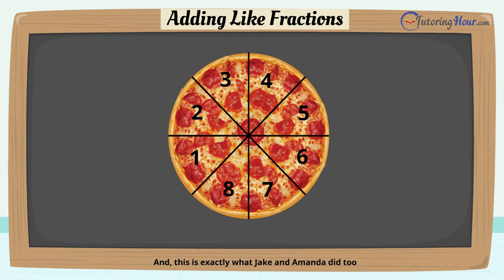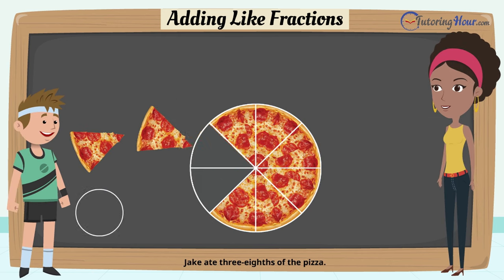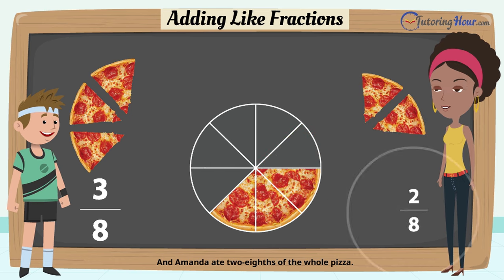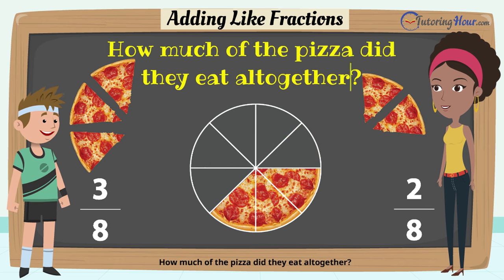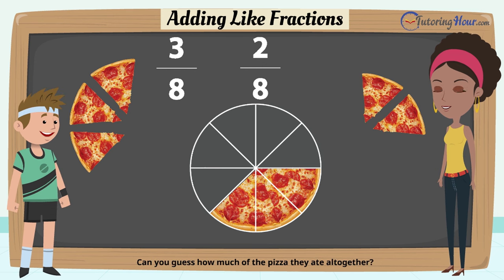And this is exactly what Jake and Amanda did too. Jake ate three eighths of the pizza and Amanda ate two eighths of the whole pizza. How much of the pizza did they eat all together? Jake ate three out of the eight slices. Amanda ate two out of the eight slices. Can you guess how much of the pizza they ate all together?